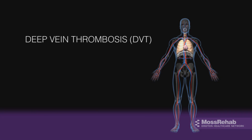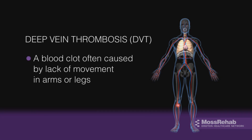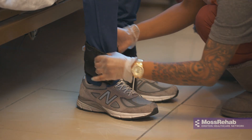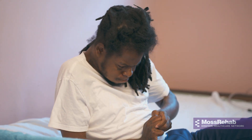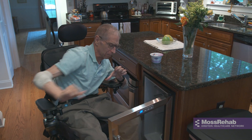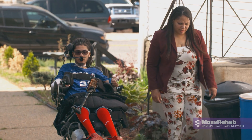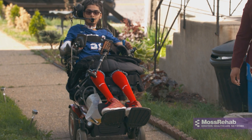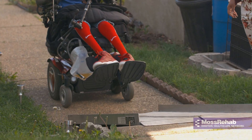Deep vein thrombosis, or DVT, is a blood clot often caused by lack of movement in your arms or legs. Some individuals will develop a DVT during their acute inpatient hospitalization or inpatient rehab that requires blood thinning medications for several months to reduce the risk of the clot dislodging and becoming a potential life-threatening situation. The risk of developing a DVT after discharge can be greatly reduced with daily exercise, getting out of bed each day, and staying active. Special elastic stockings called TEDs can also help to reduce your risk by improving circulation and minimizing swelling or discomfort in your legs.